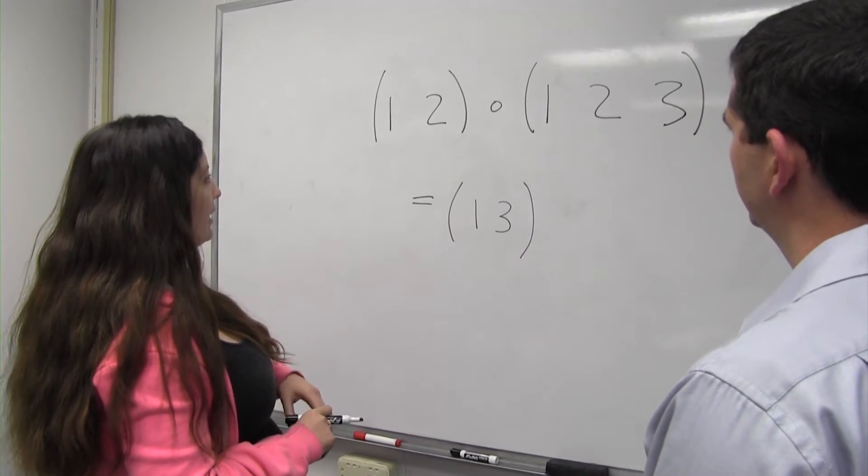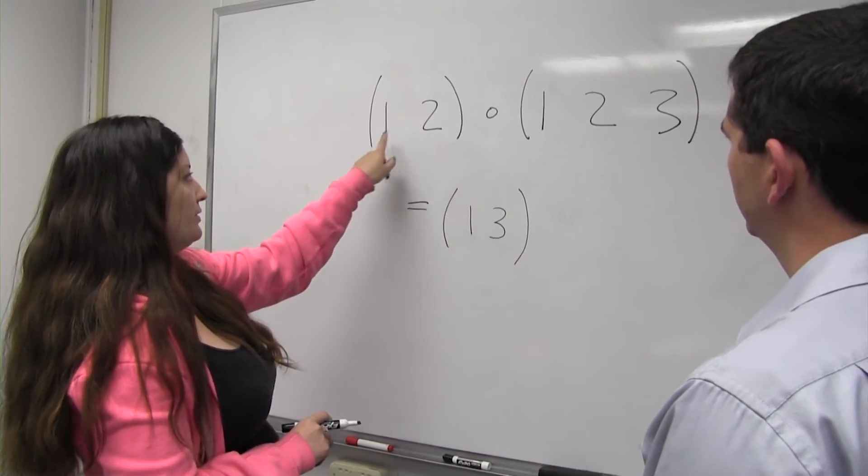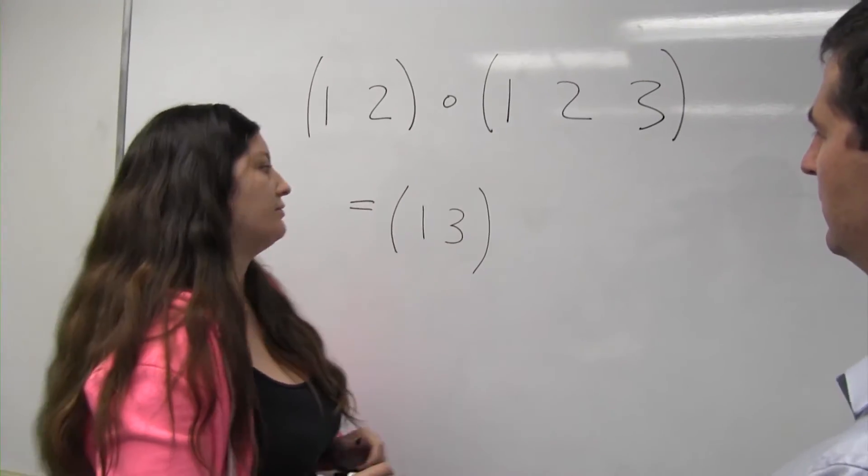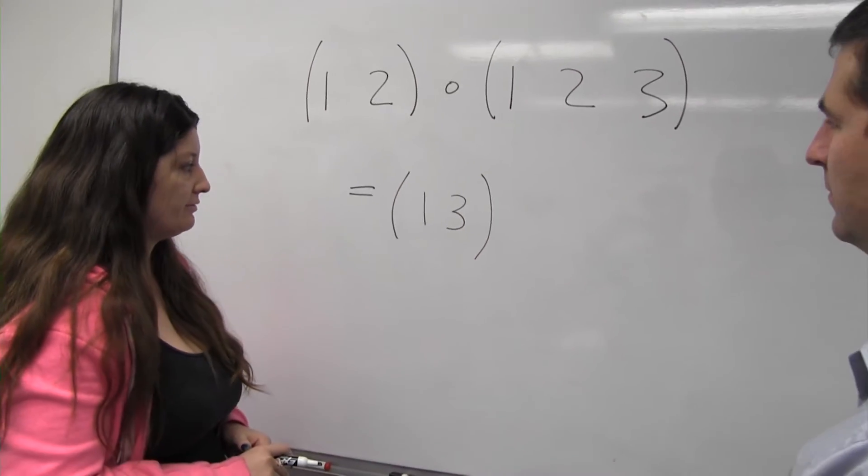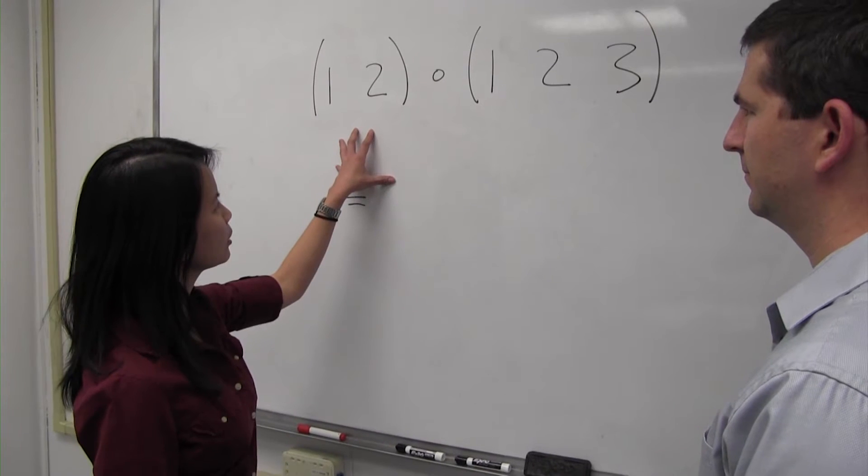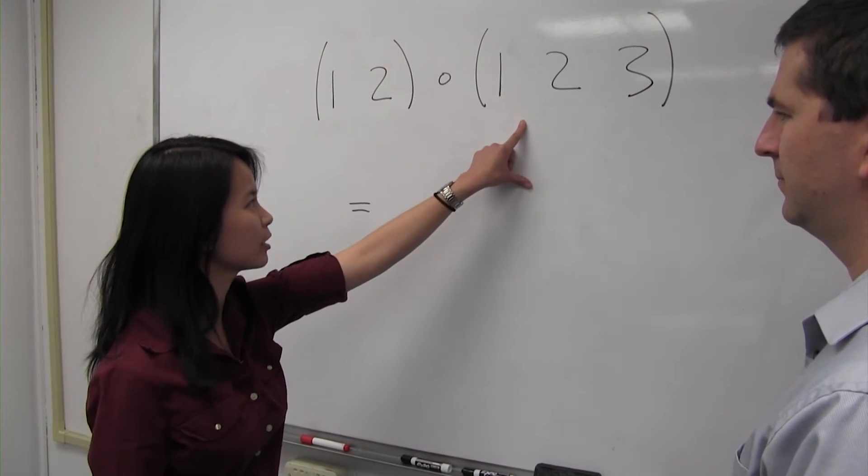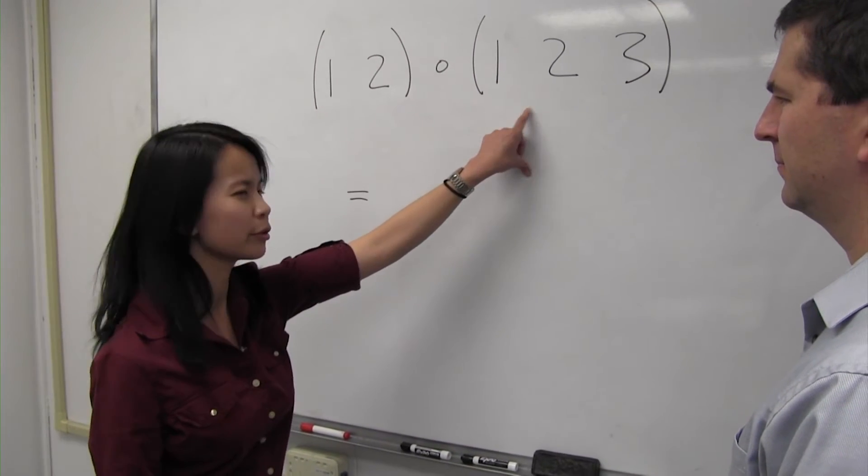And then here, in the first one, 2 goes to 1, and 1 goes back to 2. So 2 is fixed. So the 1, 2, and the 1, 2 cancel. So the 3 is left?